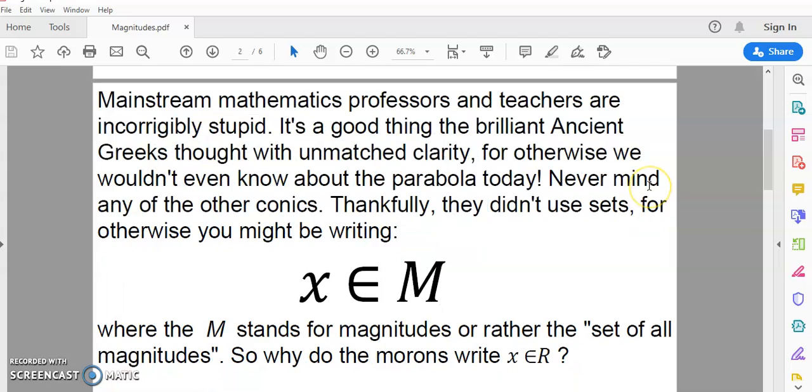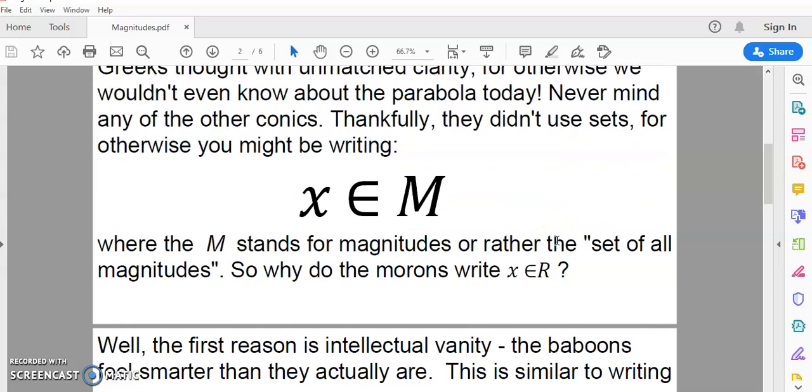Now, mainstream mathematics professors and teachers are encourageably stupid. It's a good thing that the brilliant ancient Greeks thought with unmatched clarity, for otherwise, we wouldn't even know about the parabola today. Never mind any of the other conics. Thankfully, they didn't use sets, for otherwise, you might be writing x is an element of M, where the M stands for magnitudes, or rather, the set of all magnitudes. So, why do the morons write x is an element of R? Well, let's continue.